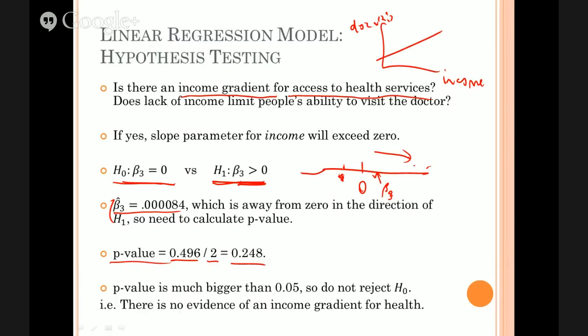And it doubles that quantity to assume that you might also go in the negative direction. Well, we don't want to double that quantity because we're only looking at one direction. So we have to take the Excel value, 0.496, and undo the doubling by dividing by 2. You can't see it doing that doubling. It's all being done in the background, but that's the result. So we undo that by dividing by 2, and that becomes the relevant p-value to look at for a one-sided test.